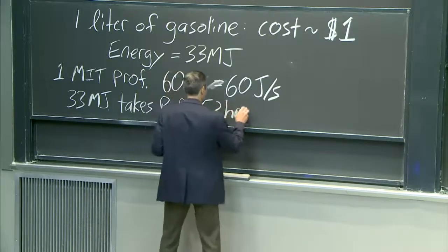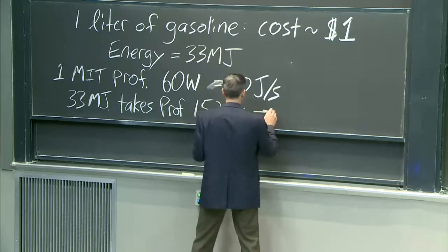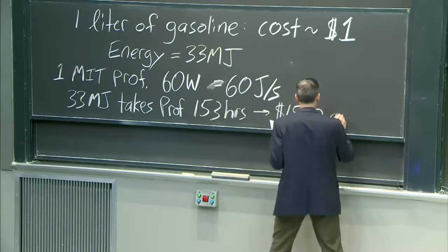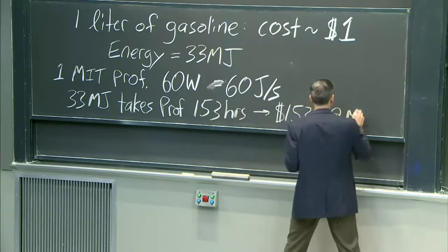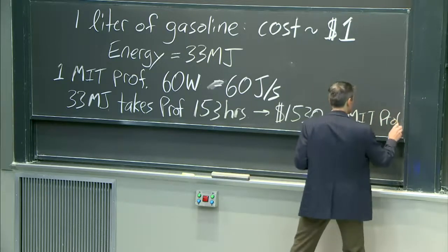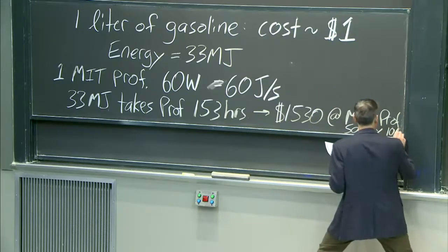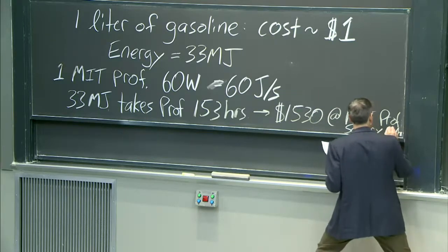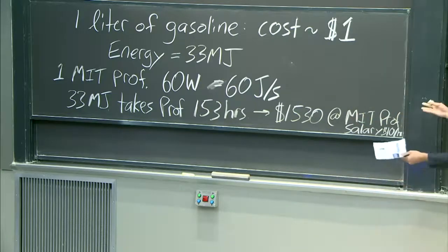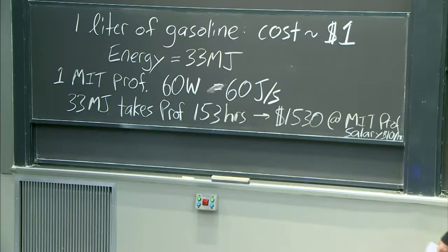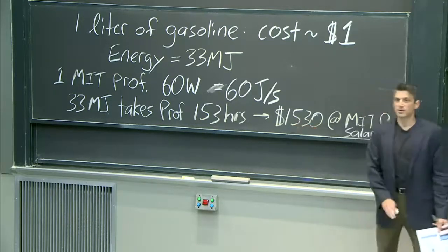Now, here's why this matters, because 153 hours will cost about $1,530 at the MIT professor salary, which is around $10 per hour. OK, but look at this. I dug something out of the ground that nature spent 100 million years making fine, and I burned it, and I got it for a dollar. I got the same amount of energy that it would have taken me literally $1,530 to pay for. That's our challenge.